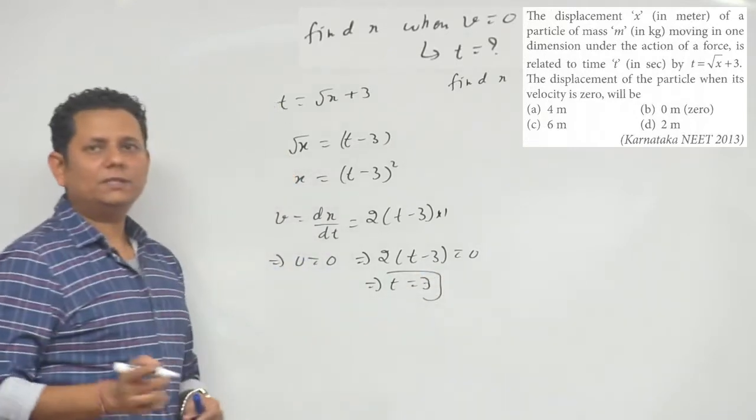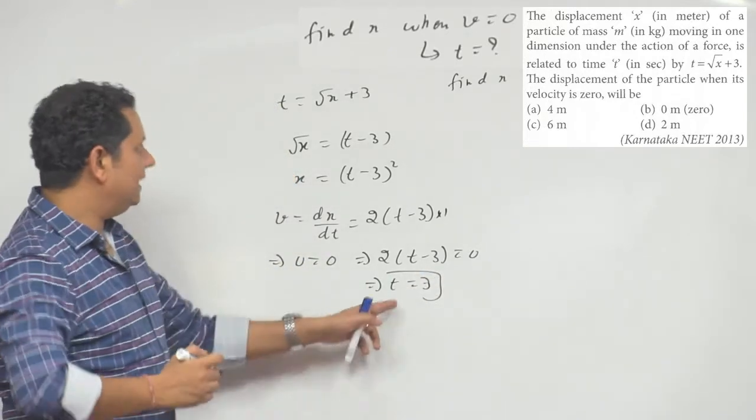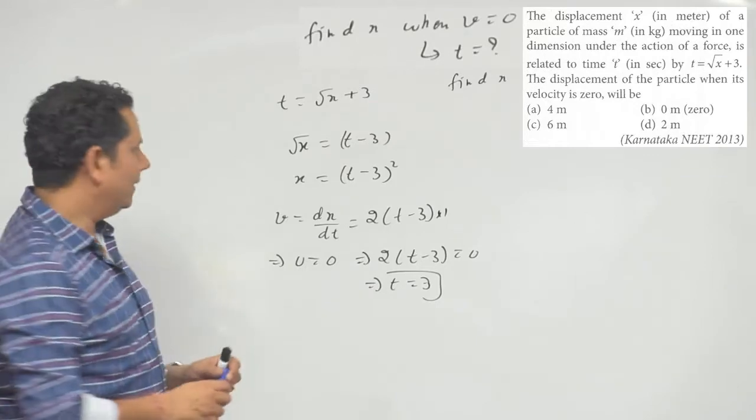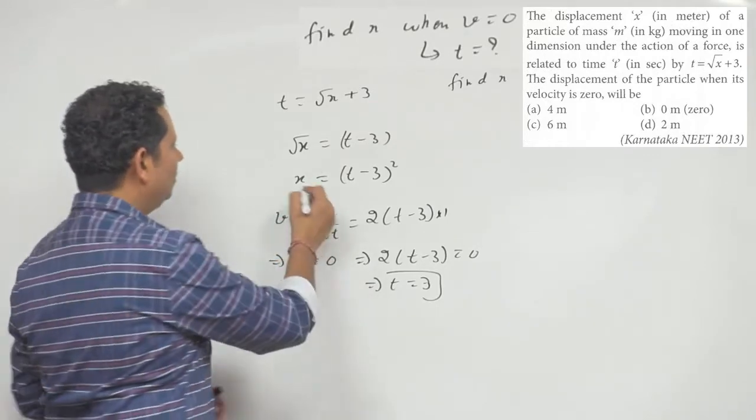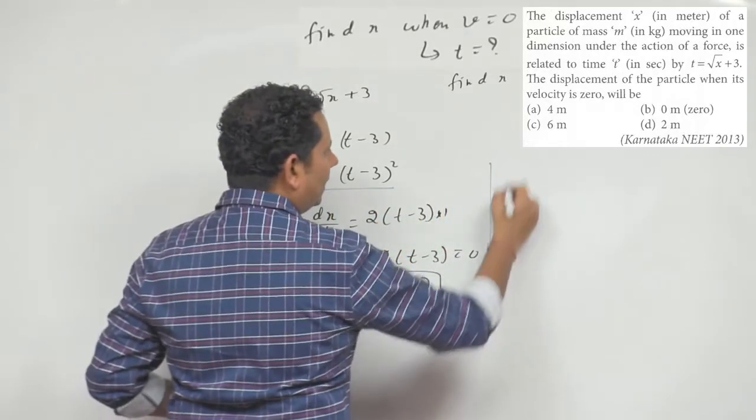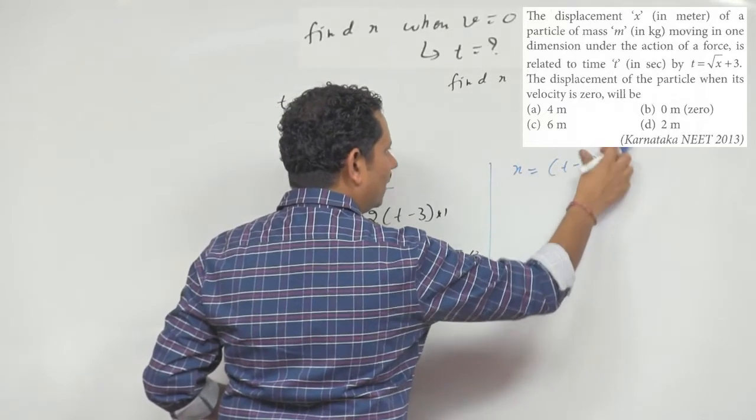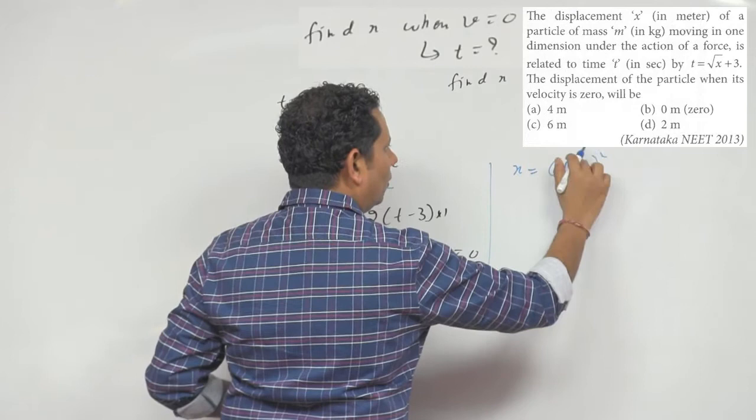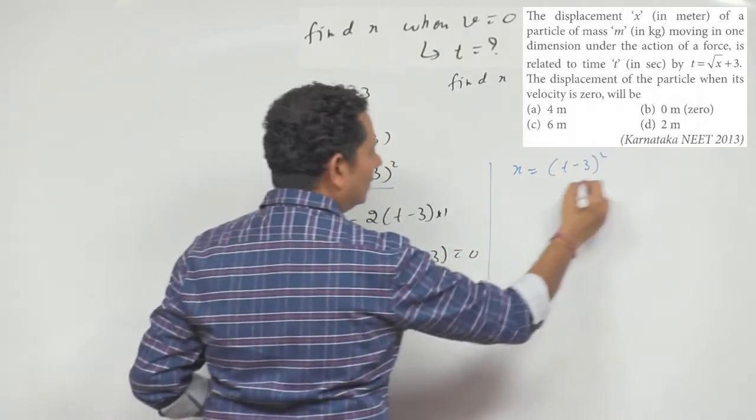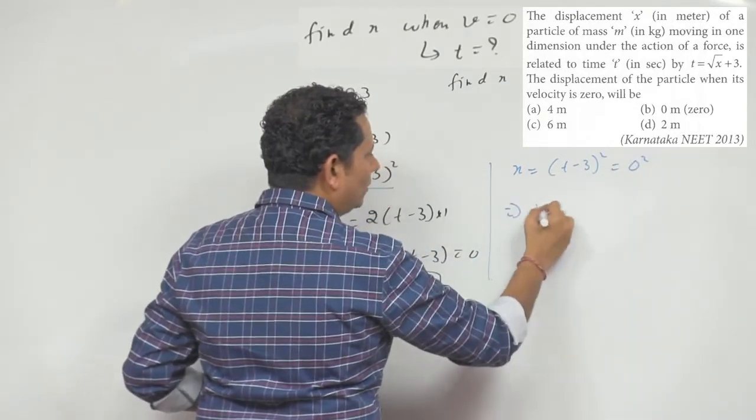So x equals (t minus 3) squared. If you put t's value as 3, then you get (3 minus 3) squared, which is 0 squared, which implies x's value is 0.